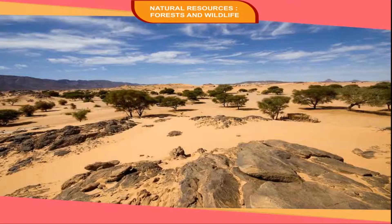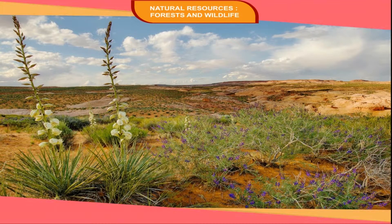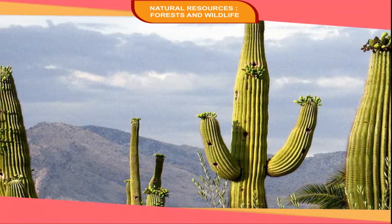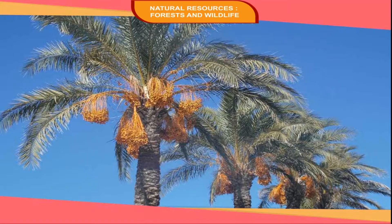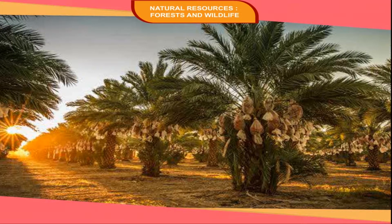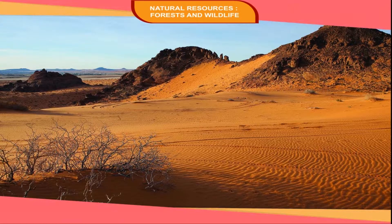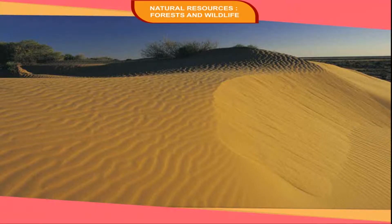Desert Vegetation: In the hot, dry deserts of the world, rainfall is low and vegetation cover is negligible. Only drought-resistant plants and xerophytes can grow. The main species are cactus, date palms, and acacia. This type of vegetation is common in deserts found on the western margins of continents in the tropical regions. The famous deserts of the world include the Sahara, the Arabian Desert, the Kalahari Desert, the Atacama Desert, and the Australian Desert. No other kind of vegetation grows here.